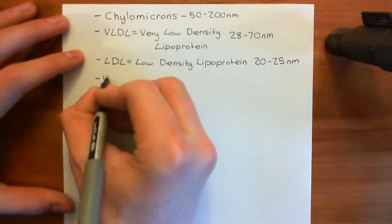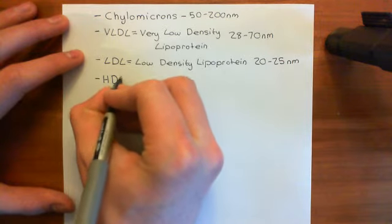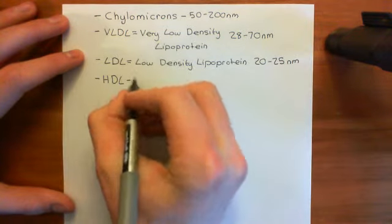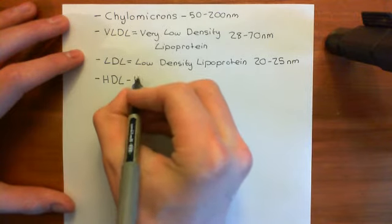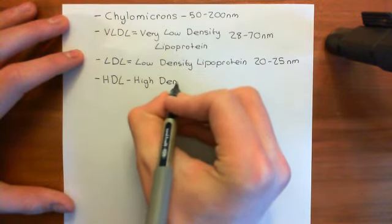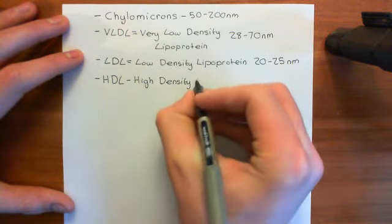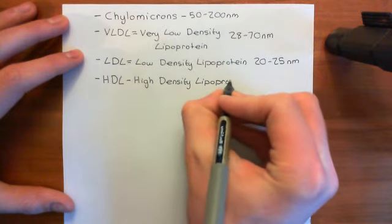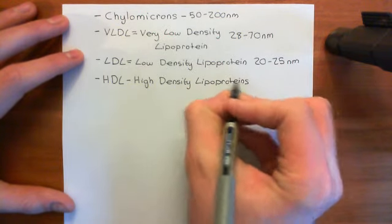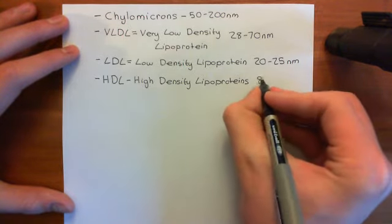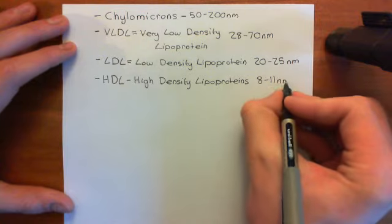And then finally, HDL — high density lipoproteins. It doesn't really fit into the pathways we're about to discuss; it comes last and sort of stands on its own, basically cleaning up after everything else. High density means a very high ratio of protein relative to lipids. These are the smallest of all the lipoproteins, with diameters between 8 and 11 nanometres.